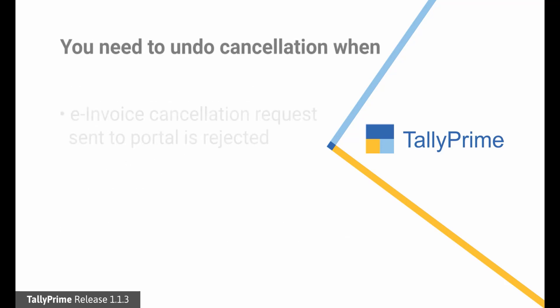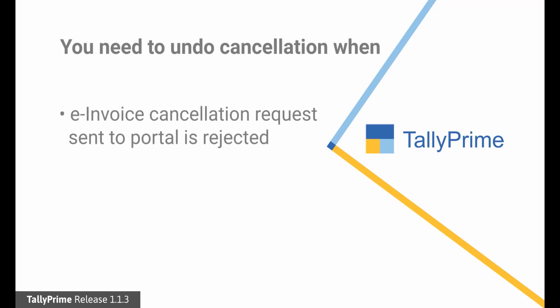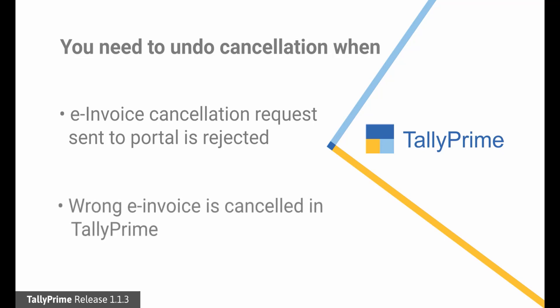The need to revert a cancelled e-invoice may arise at any time. In case you cancel an e-invoice after 24 hours of generating it, the request for cancellation will be rejected by the e-invoice portal. You can remove the reason and remarks for cancellation in Tally Prime and see that the voucher is reverted to earlier status. Further, you will need it when you accidentally cancel the wrong e-invoice in Tally Prime.